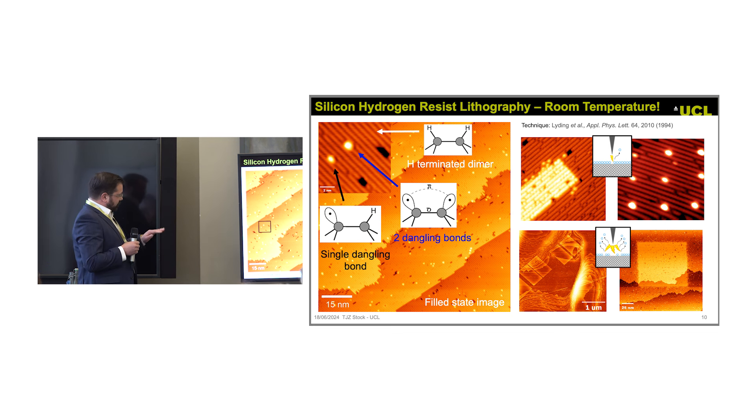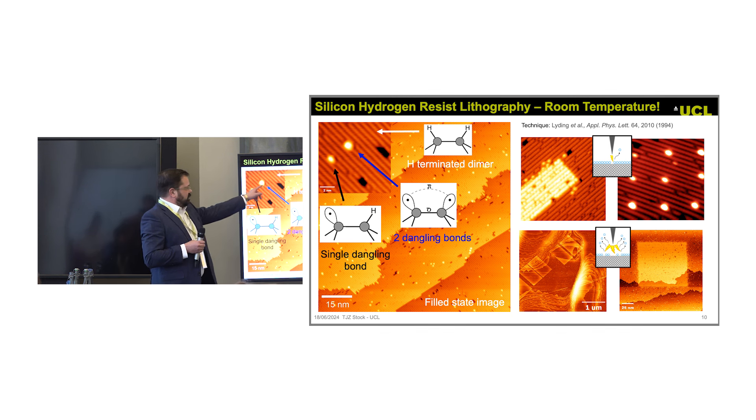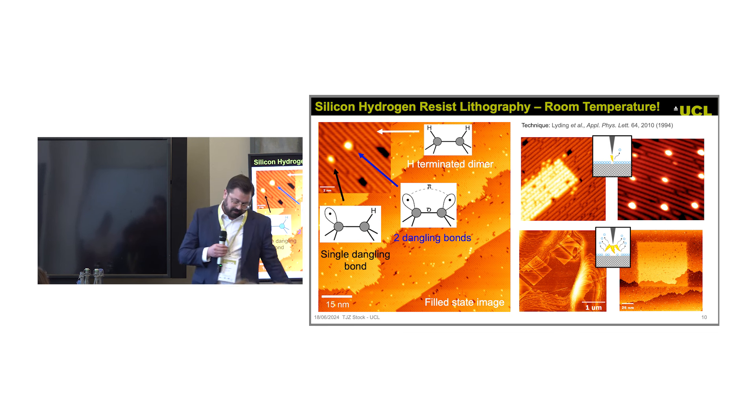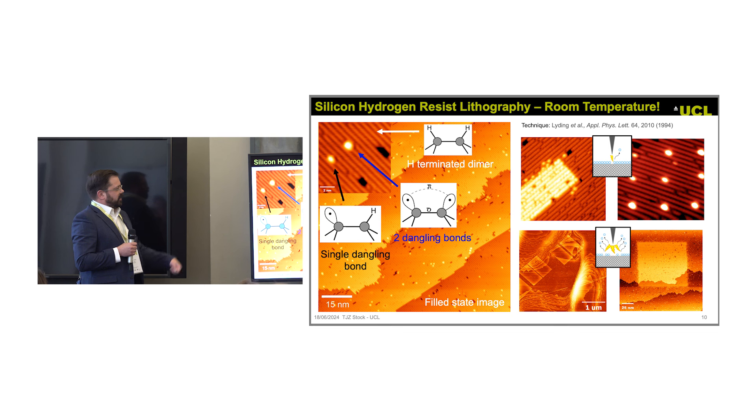If we want to fabricate in silicon, we need something that works at room temperature. This is the same surface I showed you before, silicon pristine atomically clean surface, but it's covered in hydrogen. These bright spots are missing hydrogen atoms. This is where the surface is reactive. Everywhere else, it's unreactive. You can use the STM tip to pattern this with atomic precision. Here we remove single hydrogen atoms. Here we draw a perfect block, and we can do larger scale.